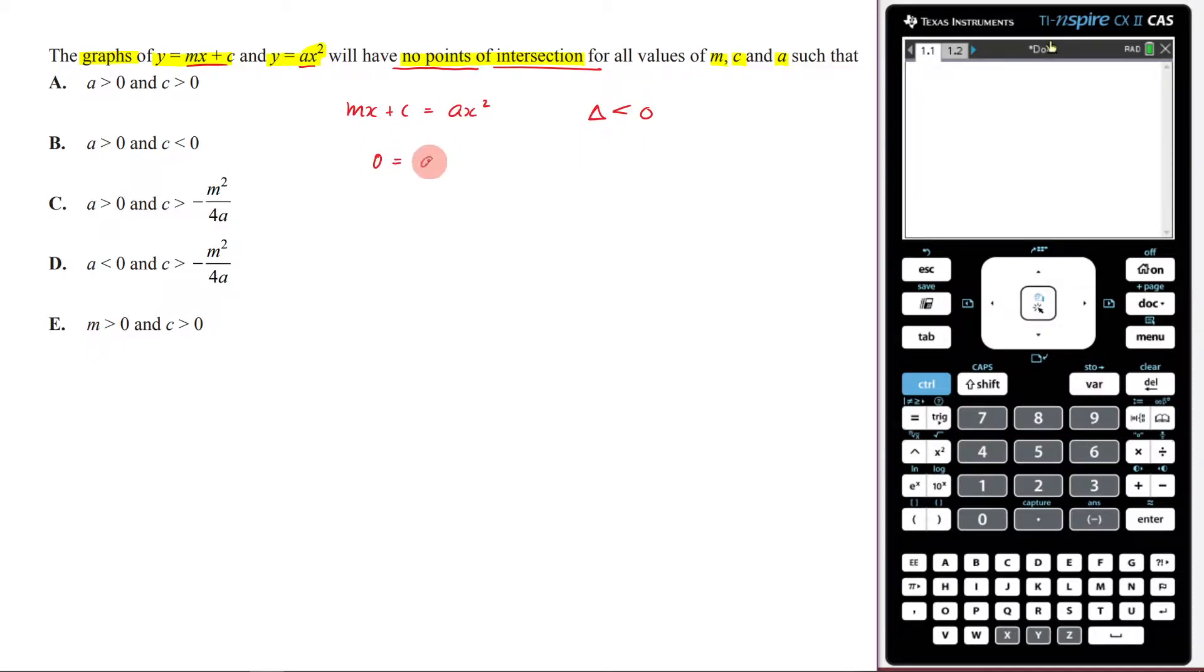So what we're going to do is we're going to rearrange this and then say, if my discriminant is less than zero, that means b squared minus 4ac is less than zero.